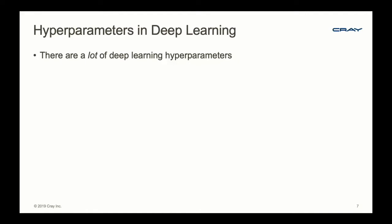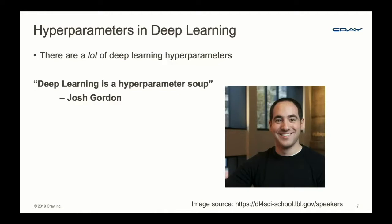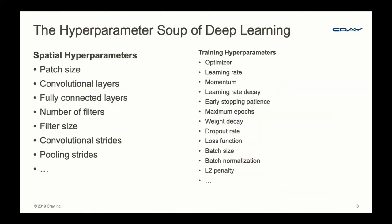In deep learning, there are a lot of hyperparameters to deal with—a lot of knobs to turn. There was a great quote from earlier this week: 'deep learning is a hyperparameter soup.' On the training side, we have optimizer learning rate and momentum. We have many spatial hyperparameters to modify as well. Hyperparameter optimization in deep learning is a very high dimensional problem.